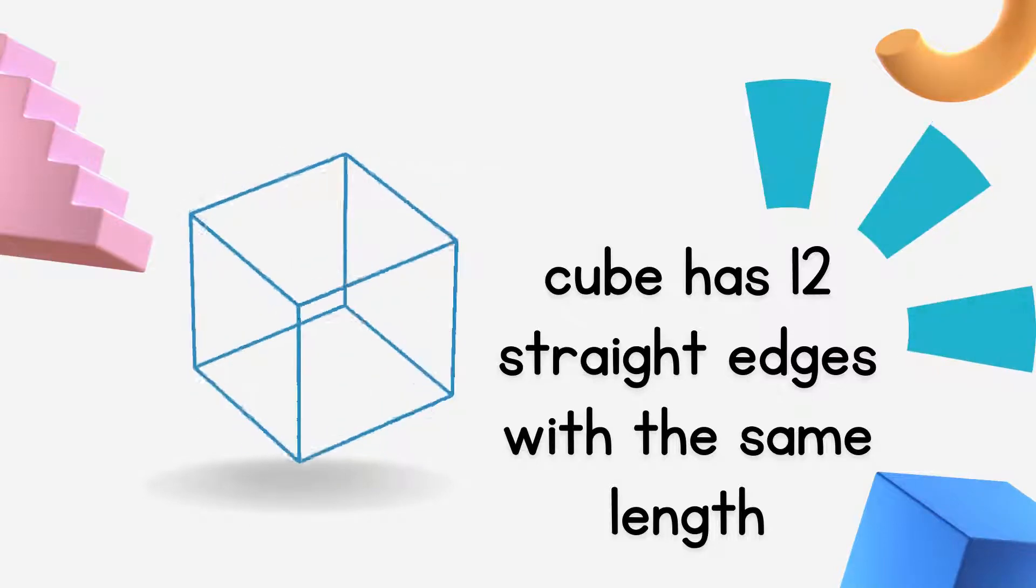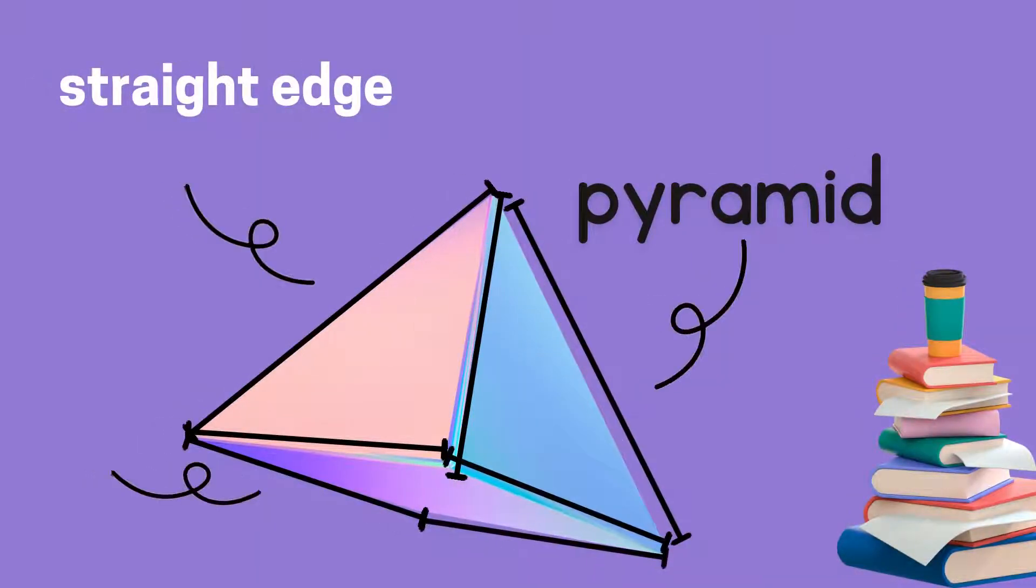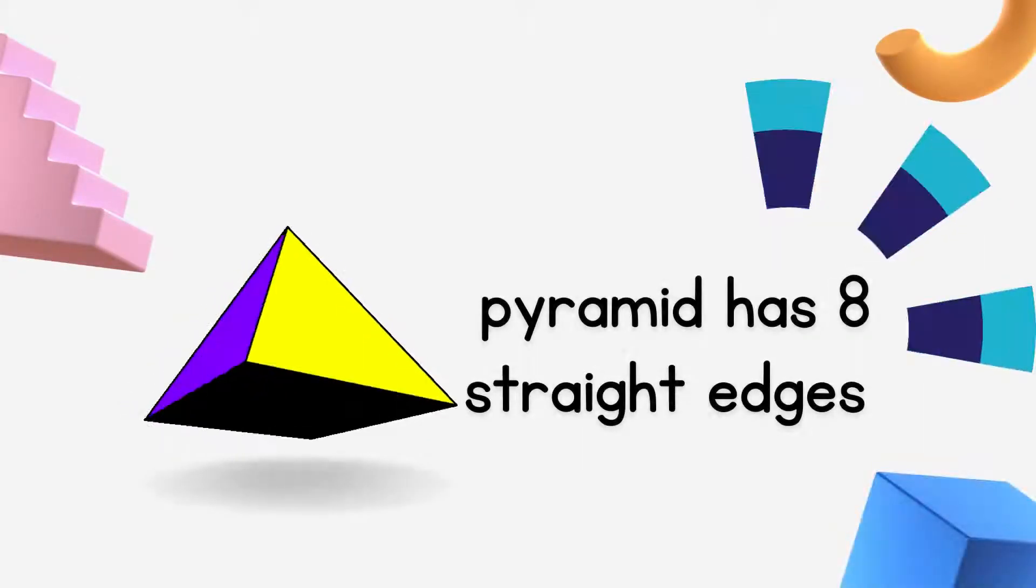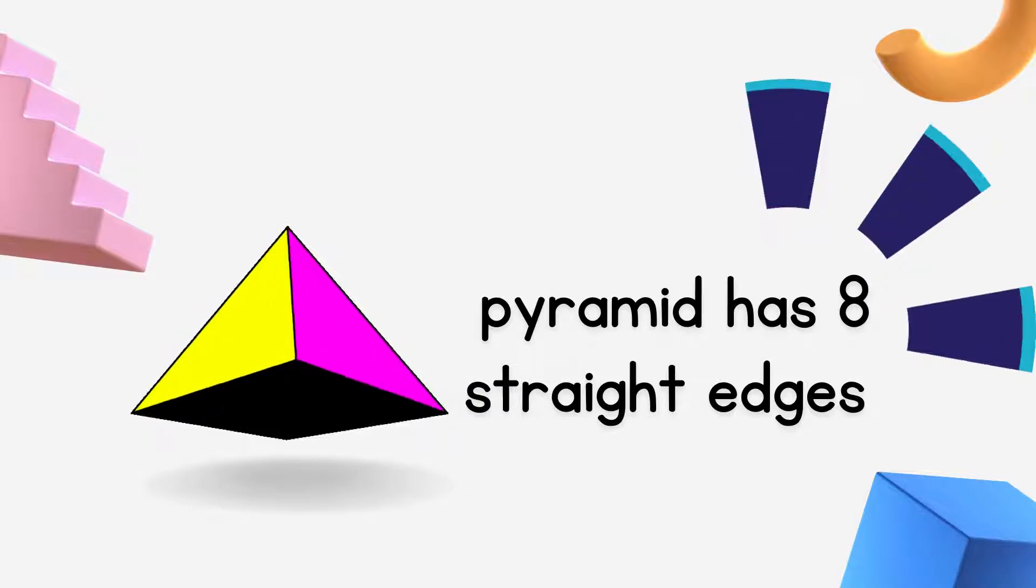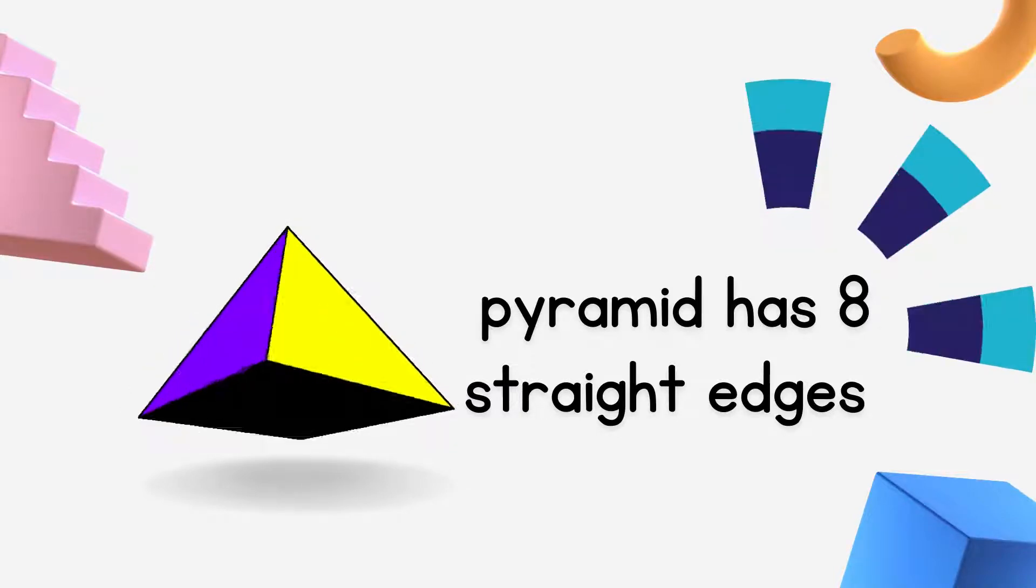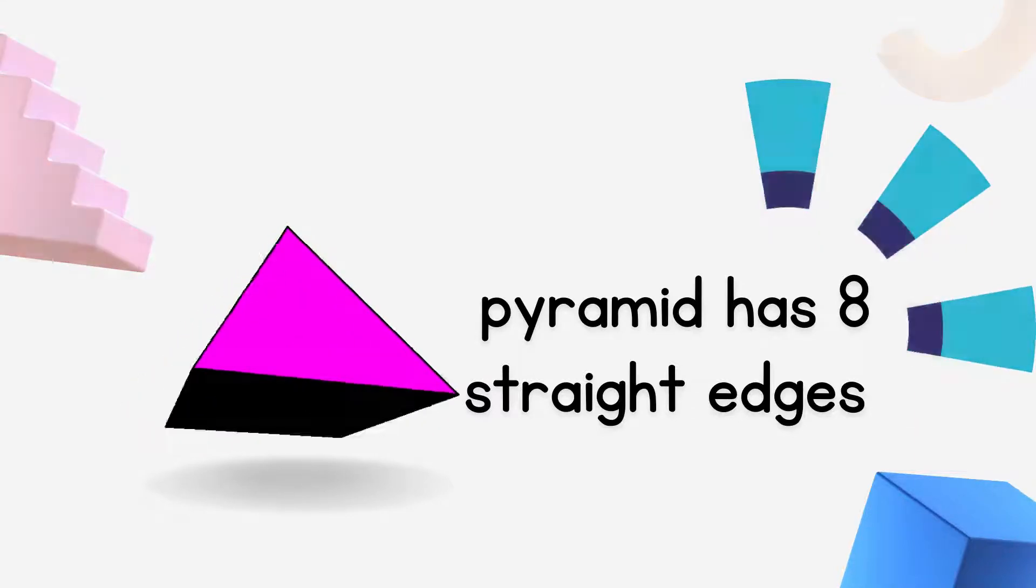Next is pyramid. Pyramid. Pyramid also has straight edges. Pyramid has straight edges. A pyramid has 8 straight edges. Pyramid has 8 straight edges.